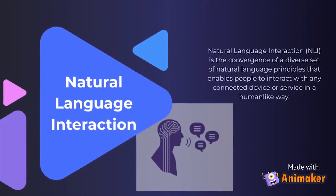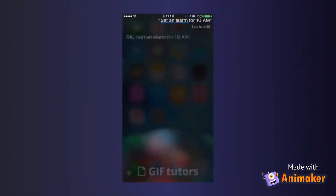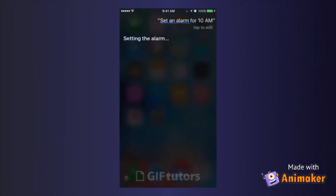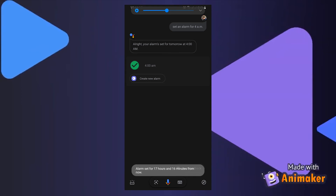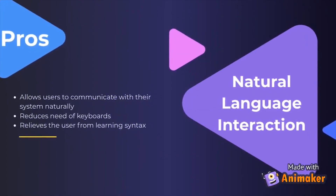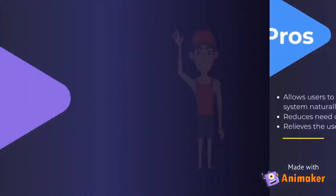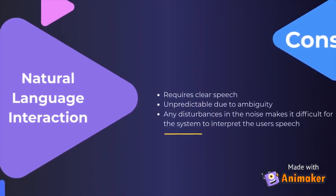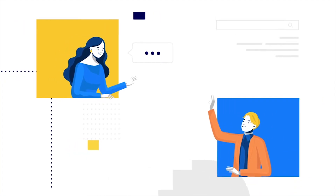Lastly we have natural language interaction. It is a type of human-computer interaction where linguistic phenomena such as verbs, phrases, and clauses act as UI controls for creating, selecting, and modifying data in a software application. For example: "Set up an alarm for 4 AM" — "All right, your alarm is set for tomorrow at 4 AM." As you can see, assistants such as Google Assistant allow users to communicate with their system very naturally, reducing the need for a keyboard overall. However, such design requires very clear speech and is unpredictable due to ambiguity, and any disturbances in noise make it difficult for the system to interpret the user's speech.